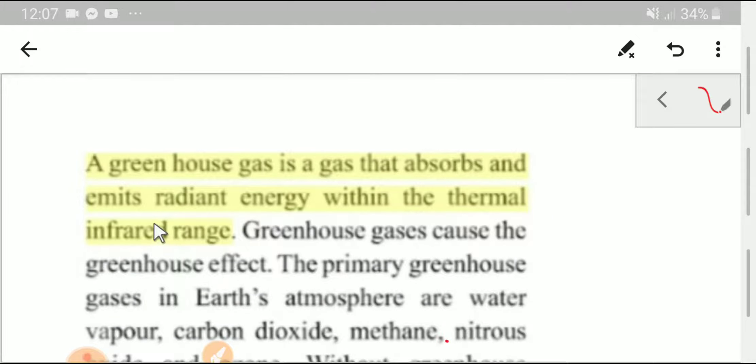Here is the definition of a greenhouse gas. A greenhouse gas is a gas that absorbs and emits radiant energy within the thermal infrared range. That is, a greenhouse gas can absorb IR radiation and emit IR radiation.